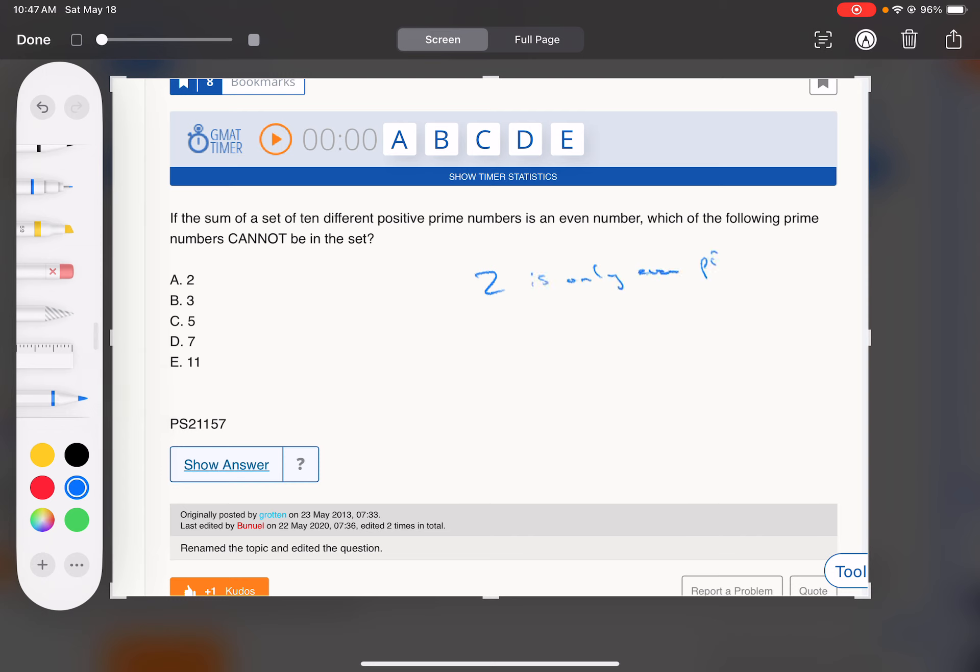It's the only even prime. Every other prime is odd. Why does that matter? When you're summing things, when you're summing prime numbers, it's almost always going to be an odd or an even sum, because it's going to be odd plus odd, which is even in almost all cases except for when you're using the number two.